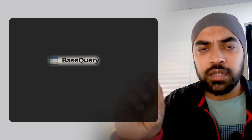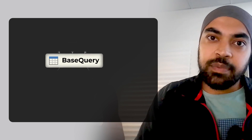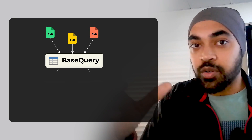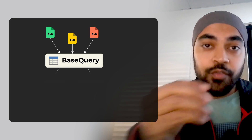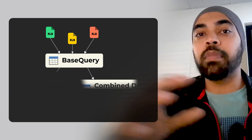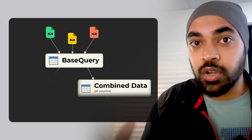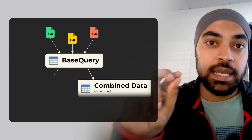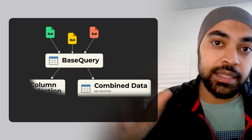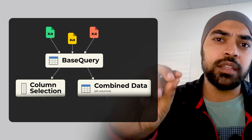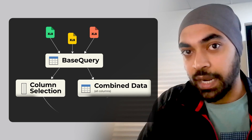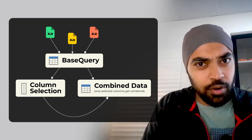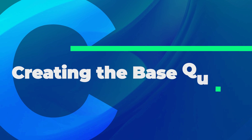Here is a quick rundown of the logic we're trying to build. The first step is to create a staged query — a base query that connects to that Excel folder and gets the data from all the Excel files. From that query, I will create another query that combines the data of all three Excel files, including all columns. Then we'll create another query that gives the user a user interface to control which columns they would like to see — and only those columns will appear in the final query.